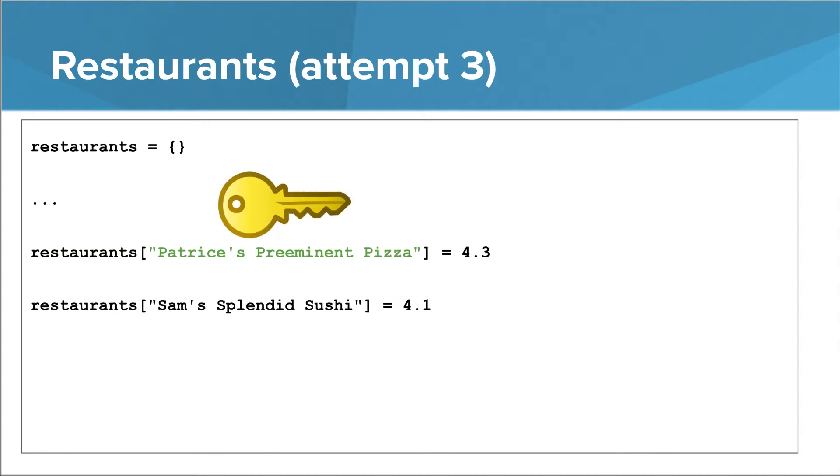It might look a little weird that we're using a string inside the square brackets here. You're used to using square brackets with lists, and when you're dealing with lists, the thing that goes inside the square brackets is an index, an integer. With dictionaries, however, the thing that goes in square brackets can be an integer, a string, and a number of other things. It's called the key, and it can be used more or less like an index.